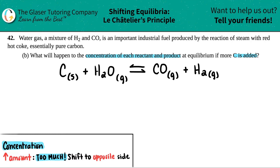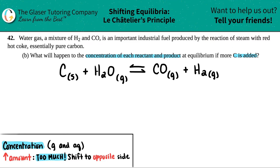However, the only ones that matter are the states that are going to be in the K formula. Remember, there are only two states allowed in that K formula: gases and aqueous. Here, the carbon being added — look at the state of the carbon — it was a solid.